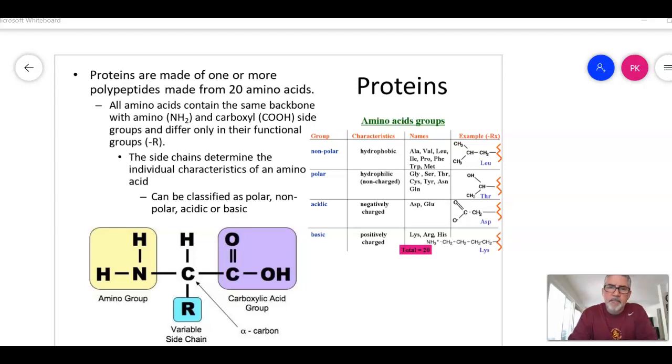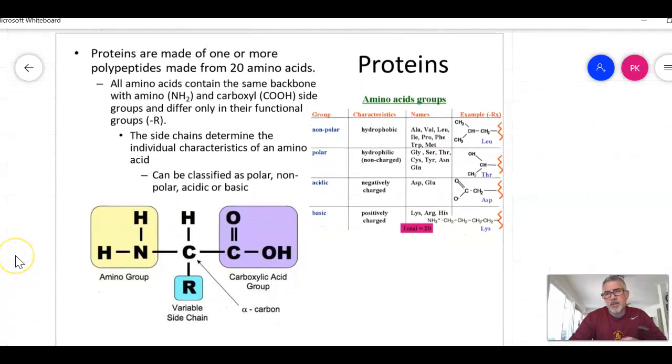Continuing with our journey into proteins. A little bit about protein structure. We talked about how proteins are made, and now a little about their structure that we need to know. Amino acids make proteins, and they're joined by peptide bonds, but all amino acids have the same basic structure.